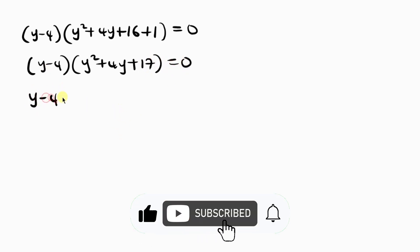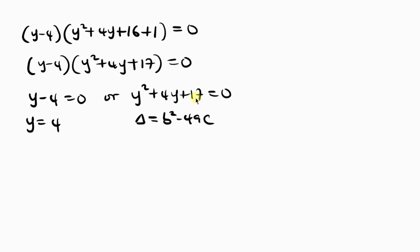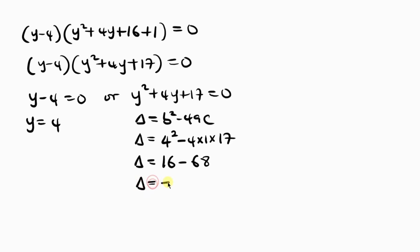From here we can see that y minus 4 equals 0, giving y equals 4, or y squared plus 4y plus 17 equals 0. For the quadratic, the discriminant is b squared minus 4ac. With b equals 4, a equals 1, c equals 17, we get 16 minus 68, which is negative 52. Since this is less than 0, there is no real solution here. So the only real value for y is 4.